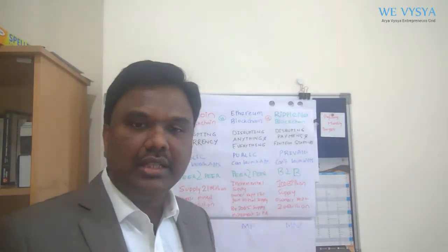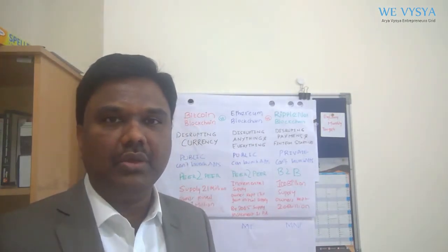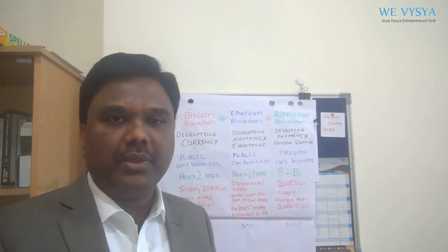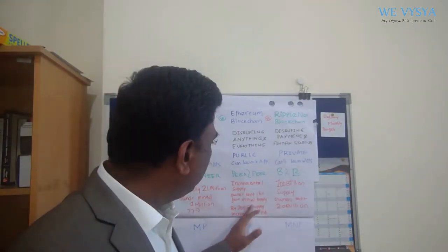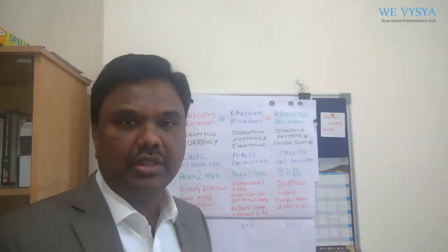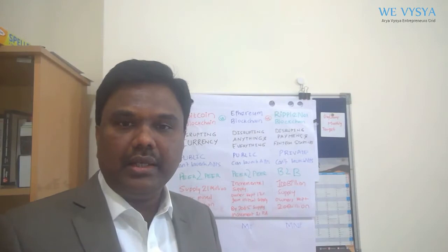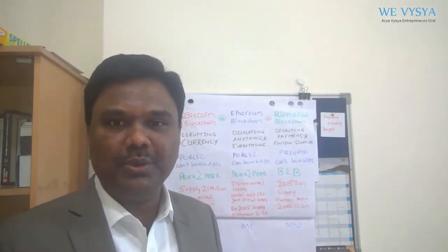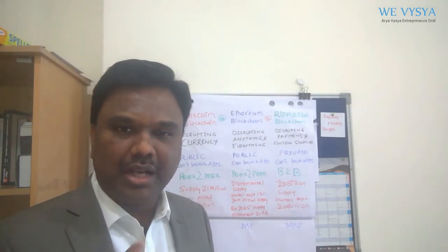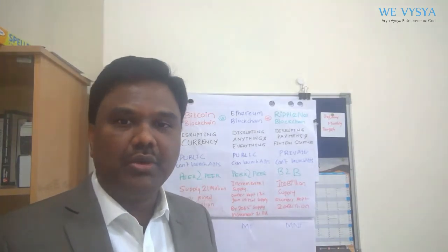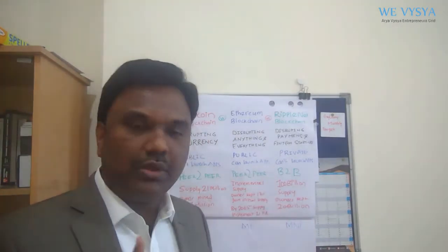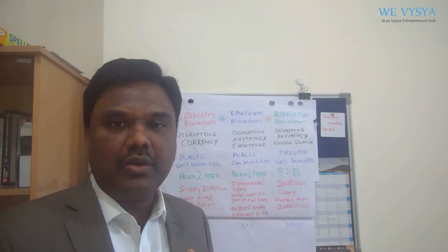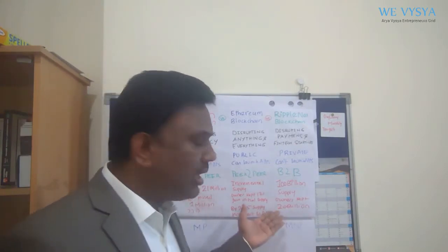Ethereum has an incremental supply. It will add approximately 14.5% in the next year, then 13.5%, and eventually decreasing to about 1% per year. For Ripple, the total supply is 100 billion. 20 billion — about 20% of the total supply — is distributed. The XRP price is set by the Ripple company owners.